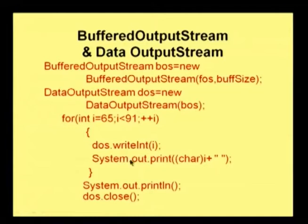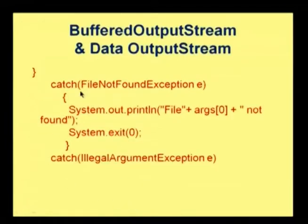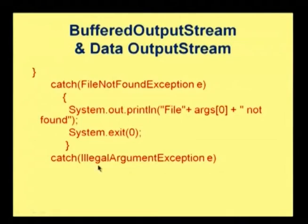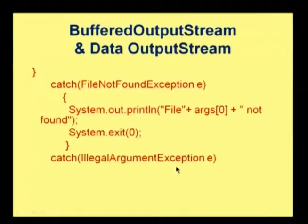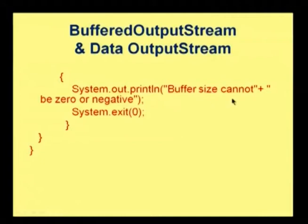After writing all these characters, we close the DataOutputStream. A FileNotFoundException is handled — if the args[0] file is not available, it prints that the file is not found. Whenever we try to access args[0] or args[1] and any of these arguments are not available, that may raise an IllegalArgumentException. In the case of the buffer size, if the argument is not properly given — meaning the buffer size cannot be 0 or negative — an exception is raised.